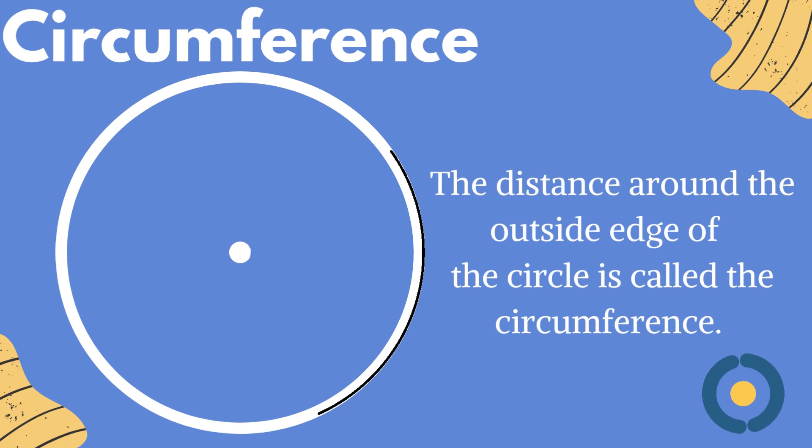Circumference. The distance around the outside edge of a circle is called the circumference. You can say it's the boundary line of the circle as well.